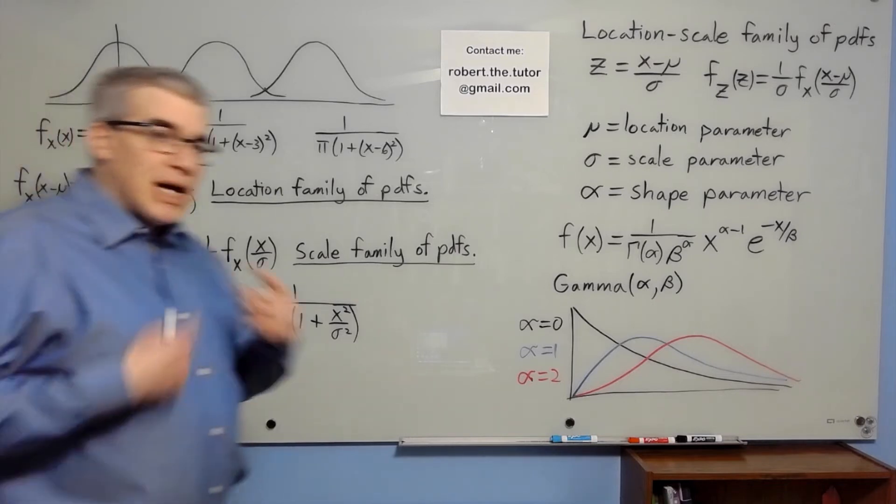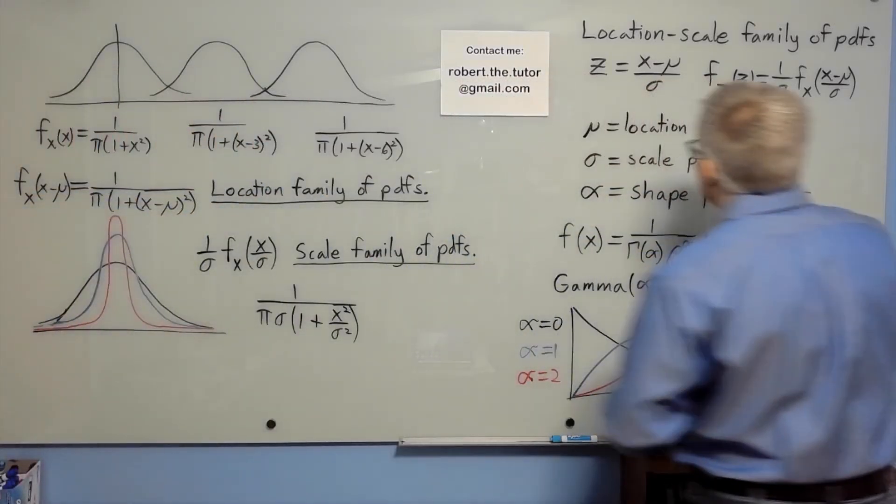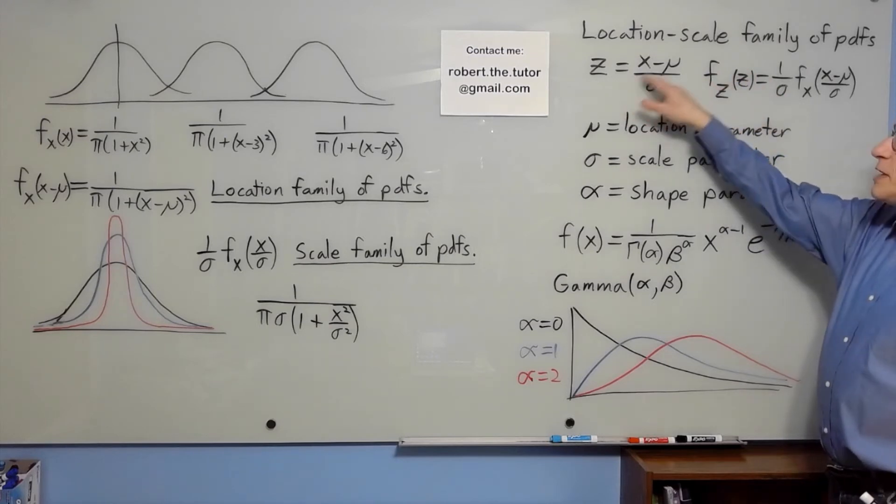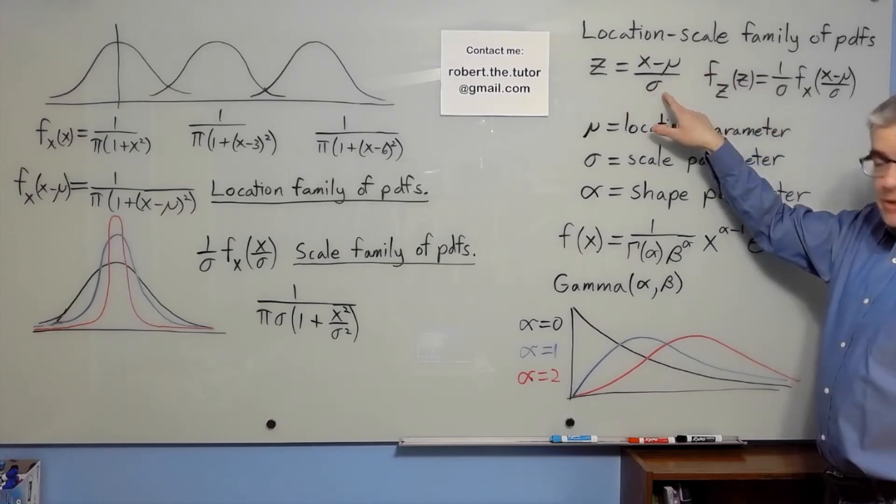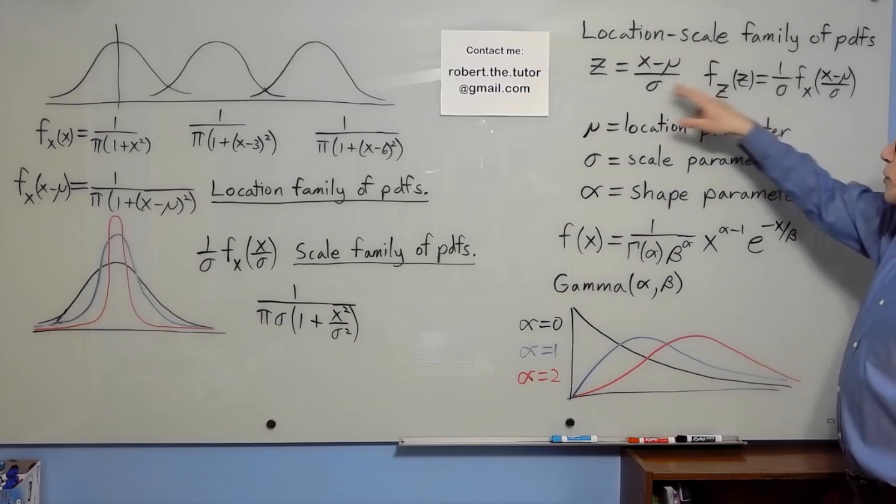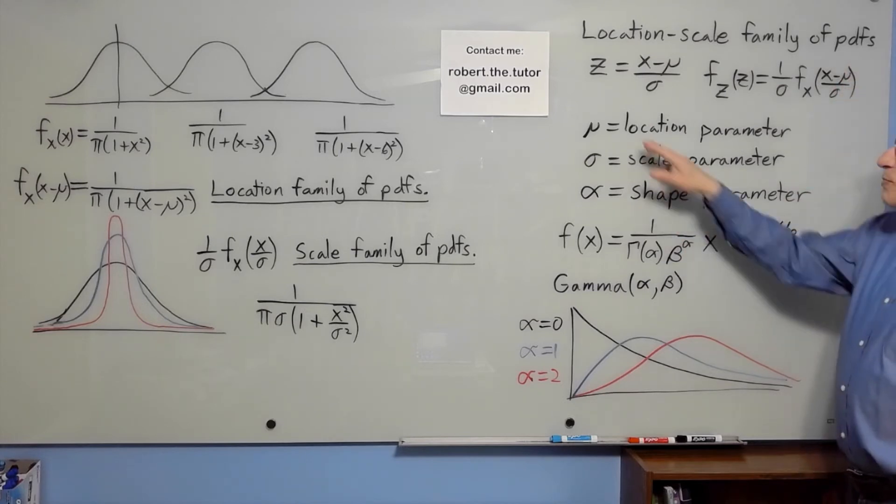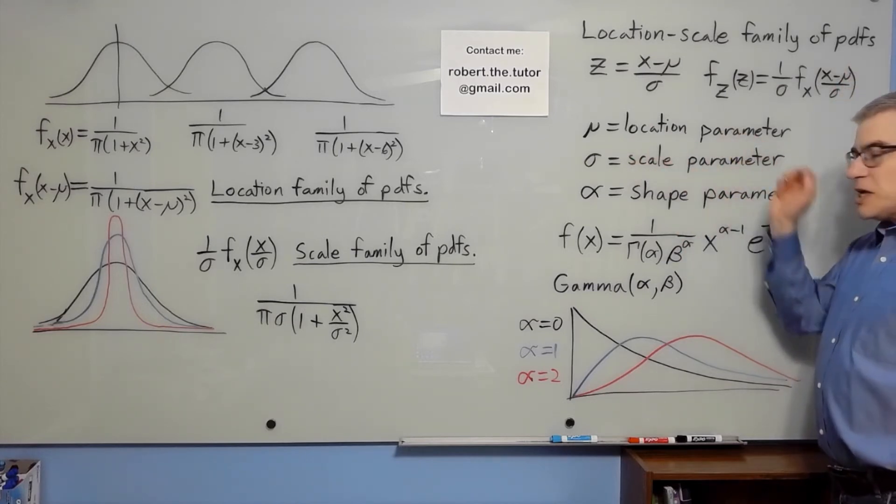You can combine both of those and have a location-scale family. And for this, it's important that first you subtract the mu, and then you divide by sigma. So the density for a variable z is 1 over sigma f_x of x minus mu all over sigma. So mu is a location parameter, sigma is a scale parameter.